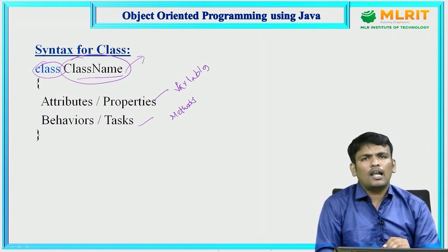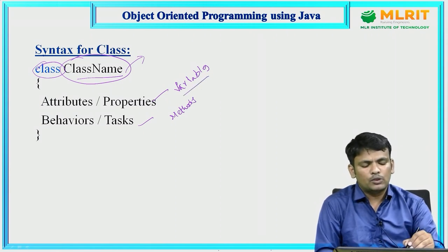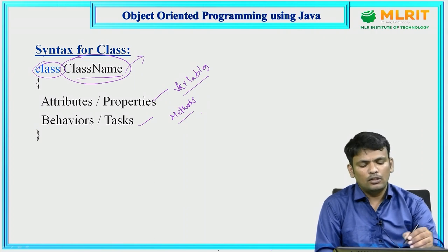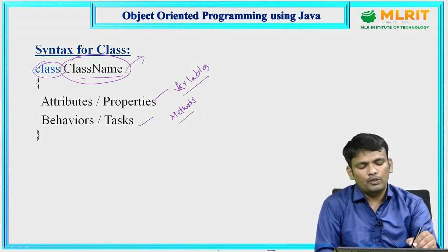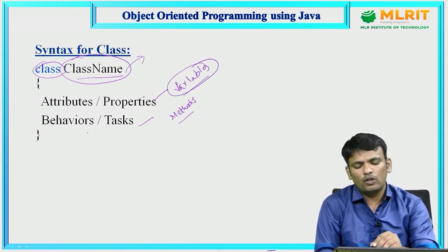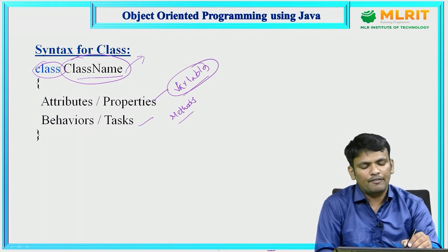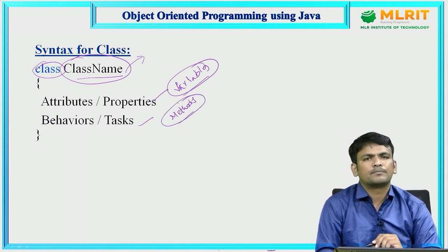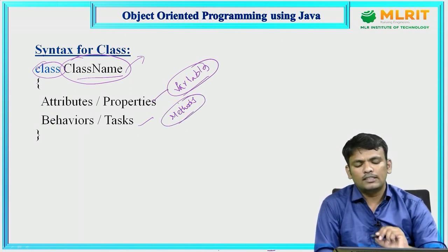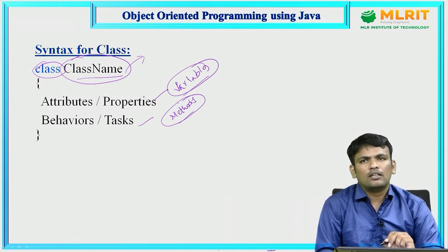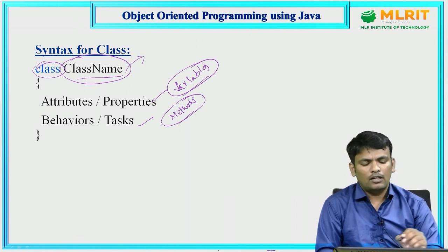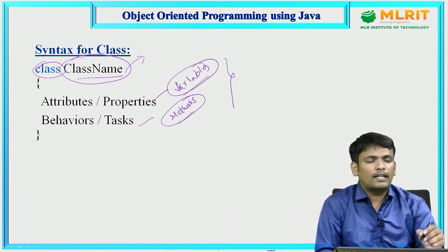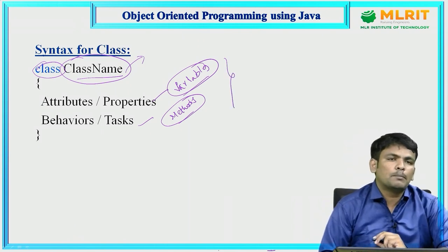Inside a class, data is stored in the form of variables and methods. To represent an attribute, use variables; to represent behavior or a task, use methods. That is the syntax of the class. To work with Java, at least one class is mandatory.